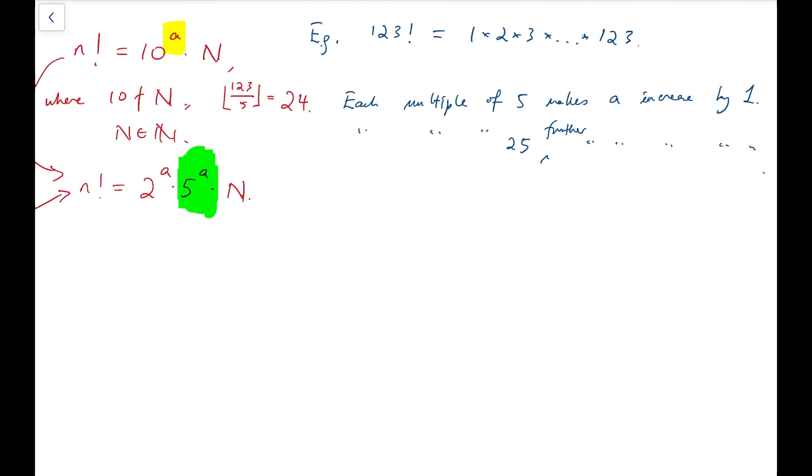And that's actually from the floor function of 123 divided by 5. Furthermore, each multiple of 25 can further make A increase by 1. So there's an extra 4 numbers, say 25, 50, 75, and 100 that would make this contribution. And we can actually iterate this, like each multiple of 5, 25, and there's 125, that would give some extra contribution of factors of 5. But we are only talking about 1 to 123, so there's nothing left.